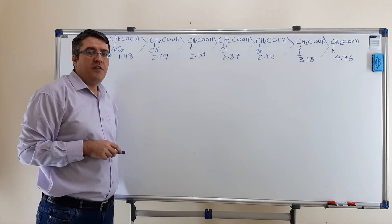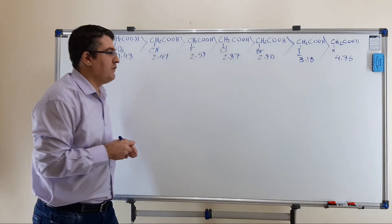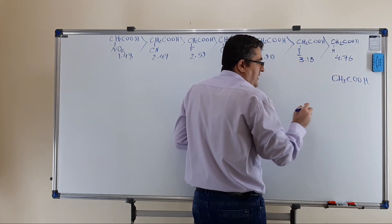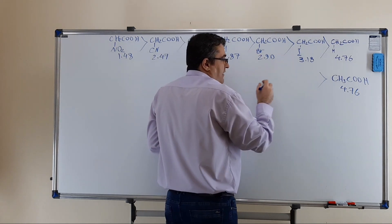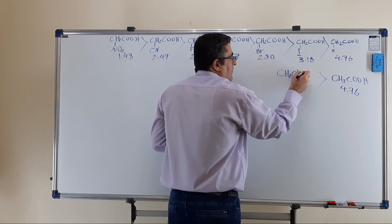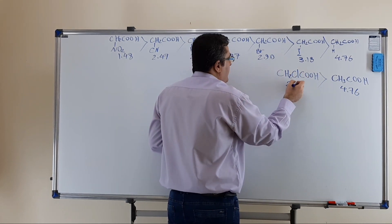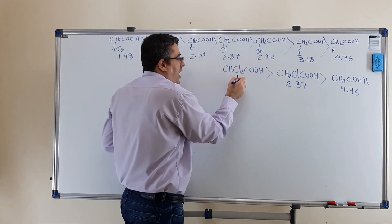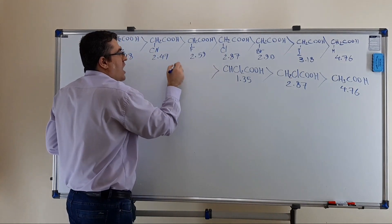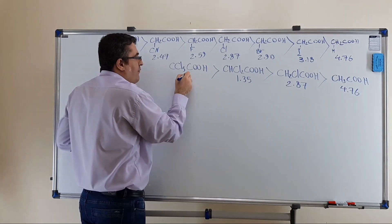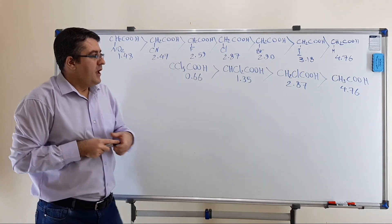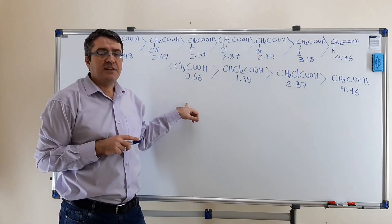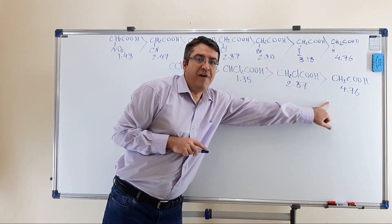As an example for the effect of number of electron-withdrawing groups, we have acetic acid with pKa = 4.76, monochloroacetic acid with pKa = 2.87, dichloroacetic acid with pKa = 1.35, and trichloroacetic acid with pKa = 0.66. By increasing the number of electron-withdrawing Cl groups, inductive effects become stronger, acidity increases, and the value of pKa decreases.